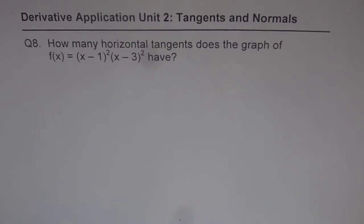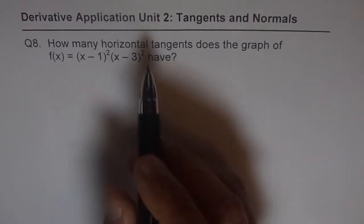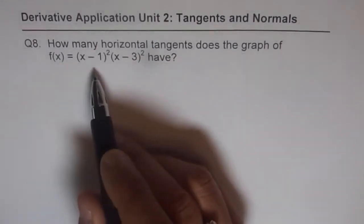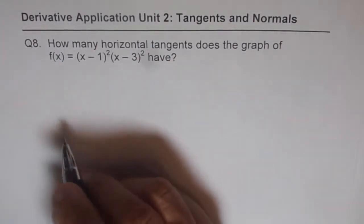Well, it's a part of practice, so you can pause the video, solve the question, and then look into my suggestion. Now, what is a horizontal tangent? Horizontal tangents means derivative is 0. That is the meaning of horizontal tangents.